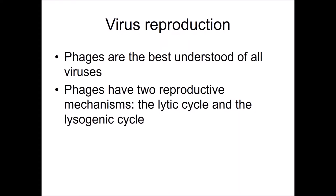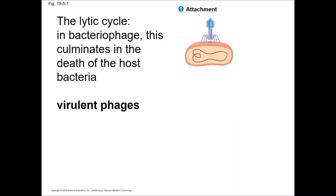Bacteriophages infect bacteria and are very well understood. The lytic cycle occurs under high nutrient conditions when bacterial cell density is high — it explodes the cells. The lysogenic cycle occurs when bacterial cell density is low and/or nutrients are low. In the lytic cycle, the host cell will die. We call these virulent phages.